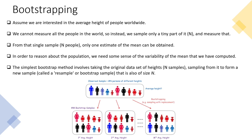From a sample of n people, we can only calculate one mean, which is not sufficient to reason about the population — we need some sense of the variability of that mean. The simplest bootstrap method takes the original dataset of n samples, resamples from it to form a new sample (called a resample or bootstrap sample) also of size n or smaller. This is how election statistics and surveys work.